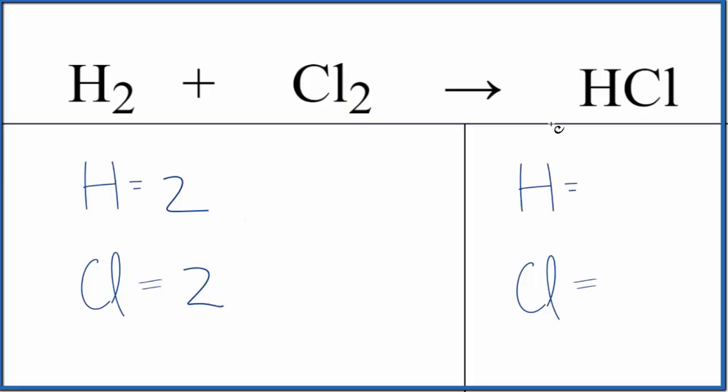For the hydrogen and chlorine in the products we have one here and one here, although we don't write the one. So those are the atoms that we need to balance in this equation.